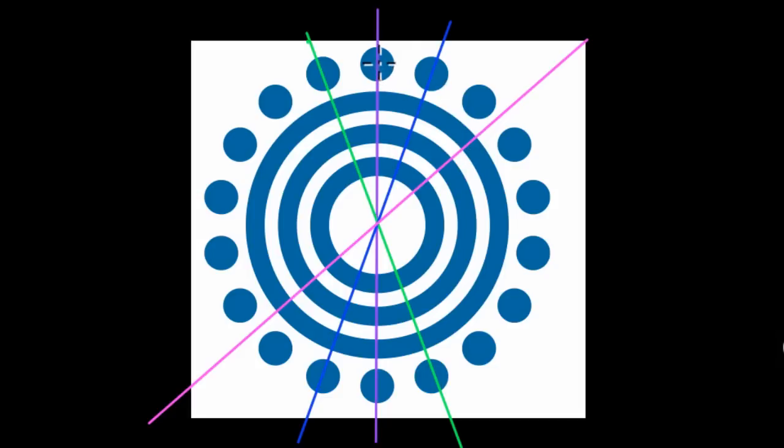And you might be thinking, well, there are 18 dots. So aren't there 18 lines that go through the dots and 18 that go between?